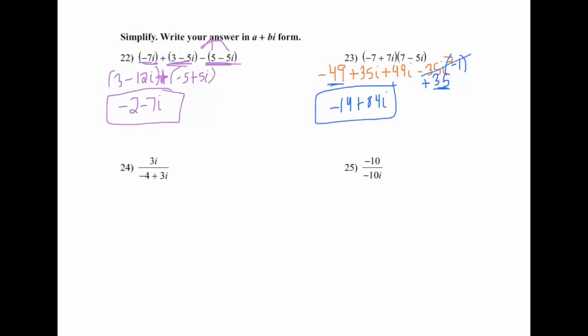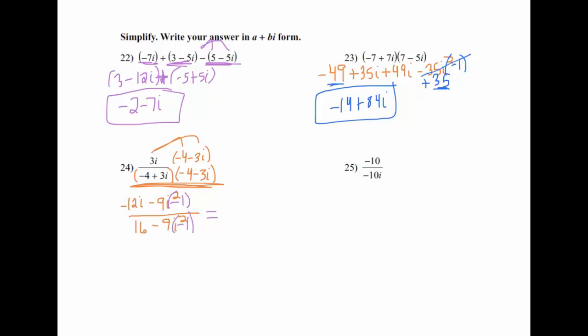When you have an i on the bottom, the goal is to get it off the bottom. For problem 24, multiply the numerator and denominator by the conjugate of (negative 4 plus 3i), which is (negative 4 minus 3i). On the bottom, outer and inner terms cancel, leaving 16 minus 9i squared. On top, distribute to get negative 12i minus 9i squared. Change i squareds to negative 1: top becomes positive 9 minus 12i, bottom becomes 16 plus 9 equals 25. Answer: 9/25 minus 12/25 i.